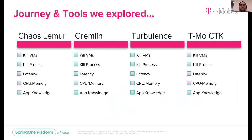Looking at the problem statement, we have two problems: platform-level attacks, and attacking applications running on the platform. We started exploring existing tools — we didn't want to reinvent the wheel. We started with an open source solution called Chaos Lemur, but all we could make it do was killing of virtual machines. At the platform level, we wanted to achieve killing VMs, killing a process, introducing latency, and introducing memory and CPU hog. Chaos Lemur was more like a chaos monkey — it can only turn off a random virtual machine, which is definitely not what we were looking for. We're looking for a bigger solution.